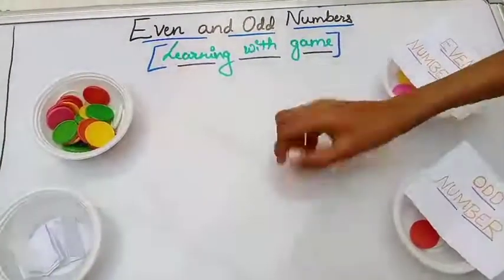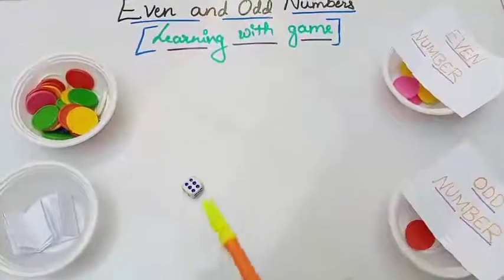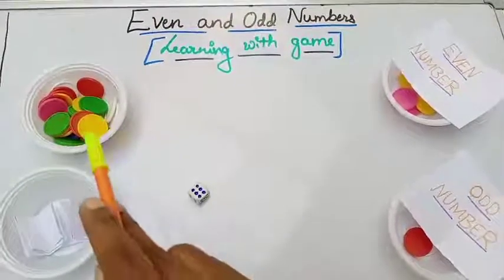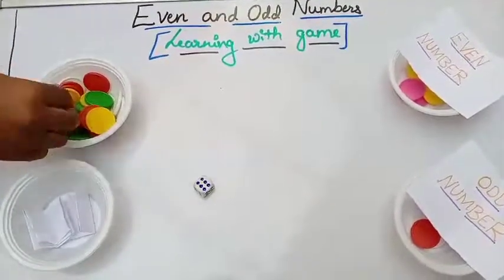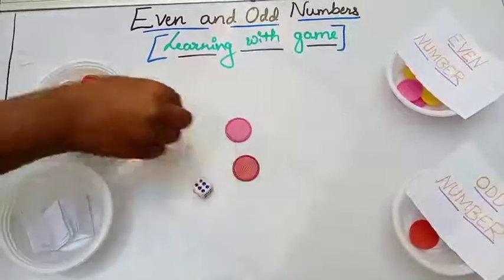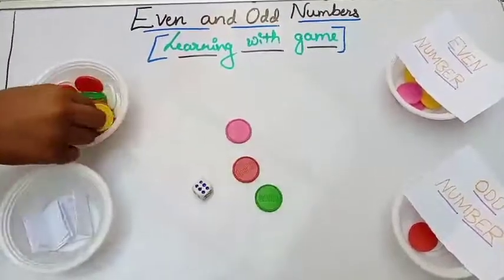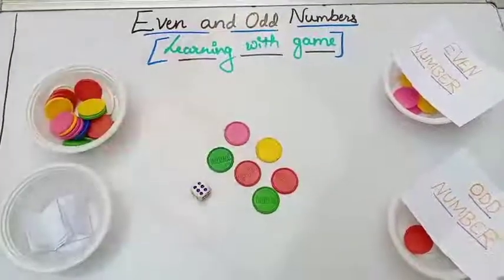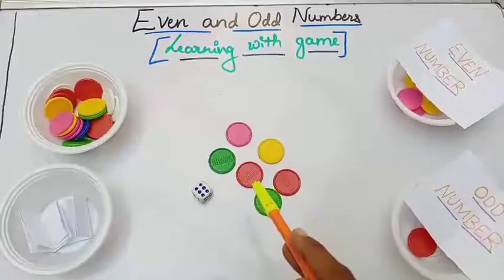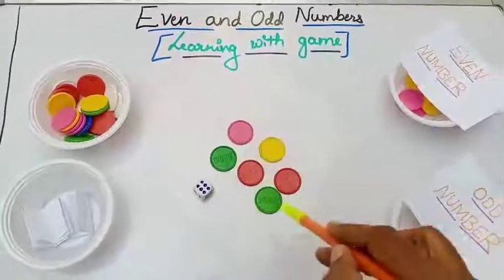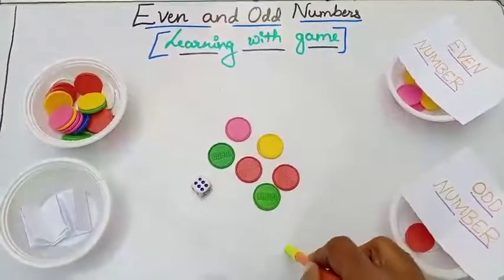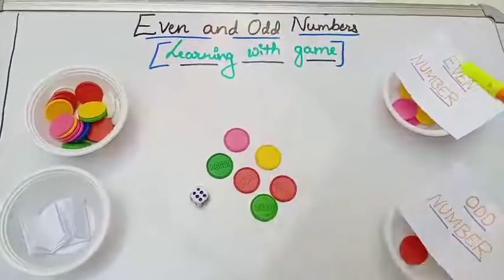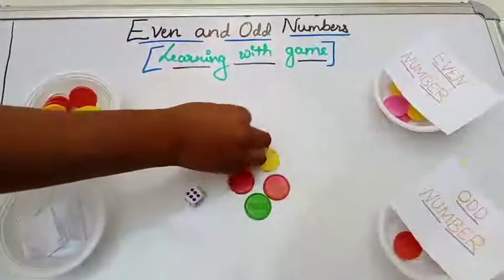Next. One, two, three, four, five, six — you rolled six. Take six coins from the bowl: one, two, three, four, five, and six. Now tell me, is six an even number or odd number, children? Six is an even number. That means these six coins will go to the even number bowl — put them in the even number bowl.